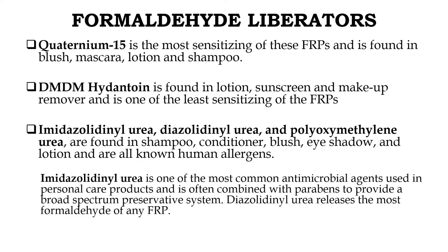The substances categorized as formaldehyde liberators include: first, Quaternium-15, which is the most sensitizing of these formaldehyde-releasing preservatives and is found in blush, mascara, lotion and shampoos. Second, DMDM hydantoin, which is found in lotion, sunscreen and makeup remover.